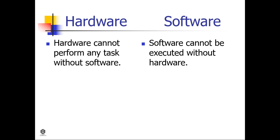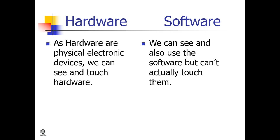Hardware cannot perform any task without software, while software cannot be executed without hardware. As hardware consists of physical electronic devices, we can see and touch hardware, while software we can see and use but cannot actually touch.